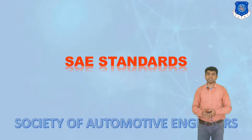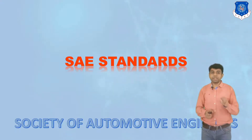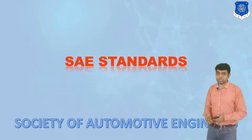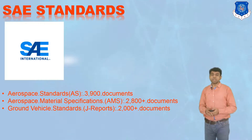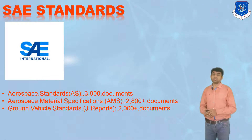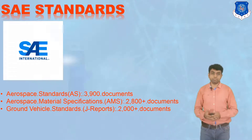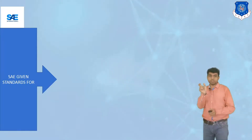Now let us understand the next standard, that is the SAE standards — Society of Automotive Engineers. We all know about this particular term, but we may not know that this organization is also involved in the development of standards. They develop specifications not only for testing parts but for the manufacturing of different components as well. Let us have a look at which particular domains this SAE organization has given standards. They have given standards for the aerospace industry — more than 3,900 documents are there. For aerospace material specification alone, they have 2,800-plus documents, and for ground vehicles, they have more than 2,000-plus documents. Based on that, it is like a code-like structure from which you need to get ideas.